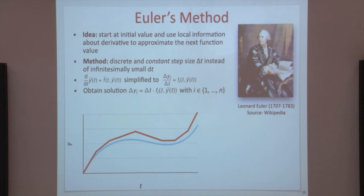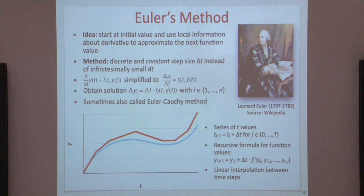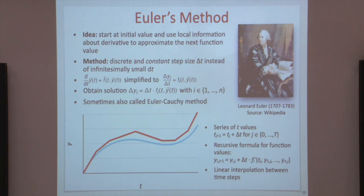This is sometimes called the Euler-Cauchy method. It results in a series of t values where the next t value is the previous t value plus delta t. We can also recursively calculate the next value of y: y in dimension i at time j+1 equals y in dimension i at time j, plus delta t times f evaluated at the previous time and previous solution. So there is a linear interpolation between the different steps, and of course there is some error in every time step — we move a little bit away from the true system.